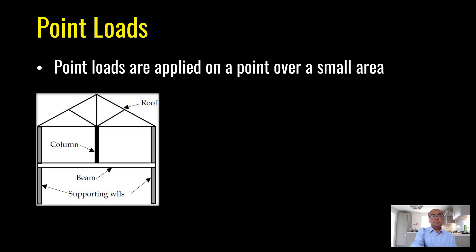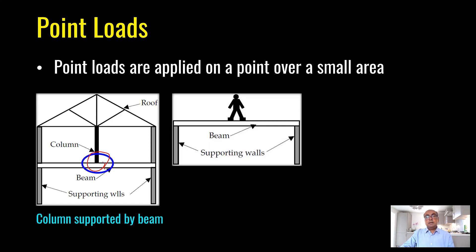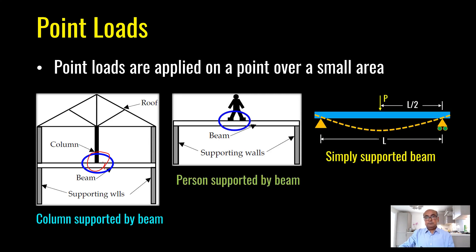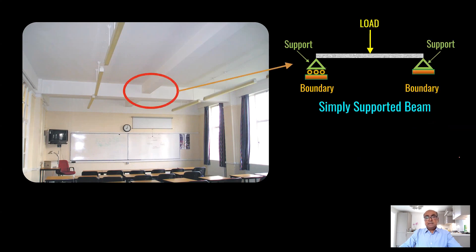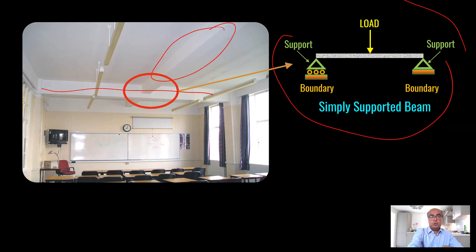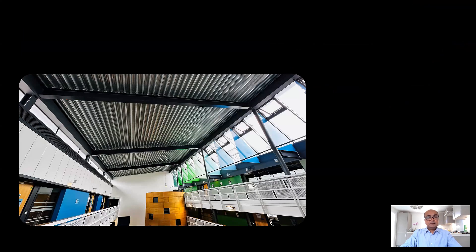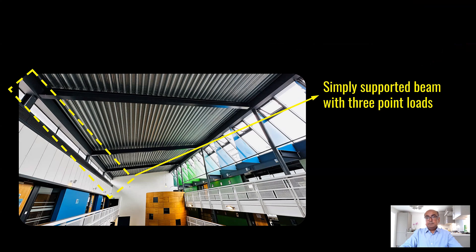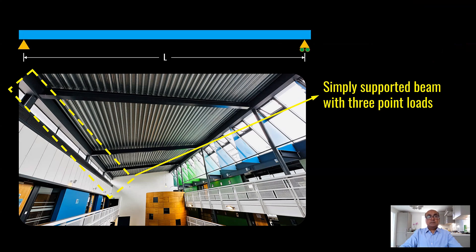In one example, a beam is supporting a point load from the column above. In another example, a person standing on a beam is applying a point load. We can graphically represent a point load on a beam with an arrow. Units for point loads can be newtons or kilonewtons. Here, a beam is resting on another beam — the main beam — and applying a point load on it.